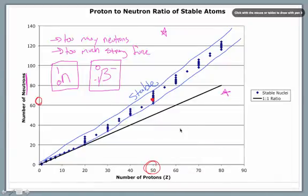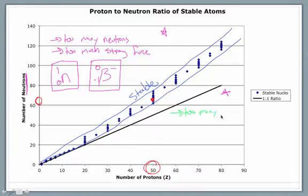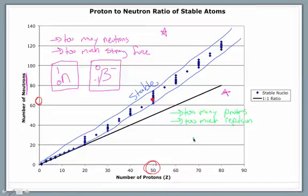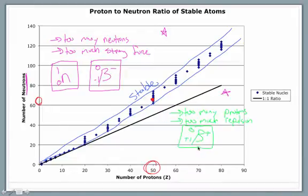The next region is below the graph. When you're plotting below the graph, this means you have too many protons, which results in too much repulsion force. You're going to give off some type of radiation that fixes this. That type of radiation is positron emission. Positron emission turns a proton back into a neutron — the opposite of beta emission — reducing the number of protons and increasing the number of neutrons.